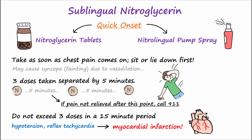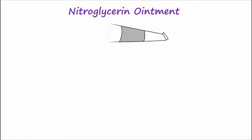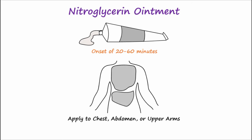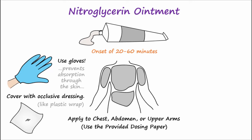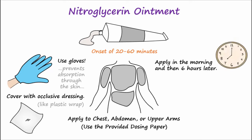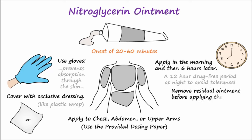While waiting for emergency personnel, additional doses can be taken if the chest pain persists, but don't exceed three total doses within a 15-minute period, as this may cause hypotension and reflex tachycardia and may elicit a myocardial infarction or heart attack. Nitroglycerin ointment is used to prevent angina attacks and has an onset of 20 to 60 minutes. Nurses often apply this to the chest, abdomen, or upper arms. The correct dosing paper that comes with the medication should be used. Don't apply using a finger unless gloves are worn, as this prevents absorption through the skin. Once the ointment is applied, don't rub it into the skin. The ointment should be covered with an occlusive dressing like plastic wrap if one is not provided. The ointment is applied in the morning and then six hours later, providing a 12-hour drug-free period at night, which is necessary to avoid tolerance to the nitroglycerin, which renders it much less effective.